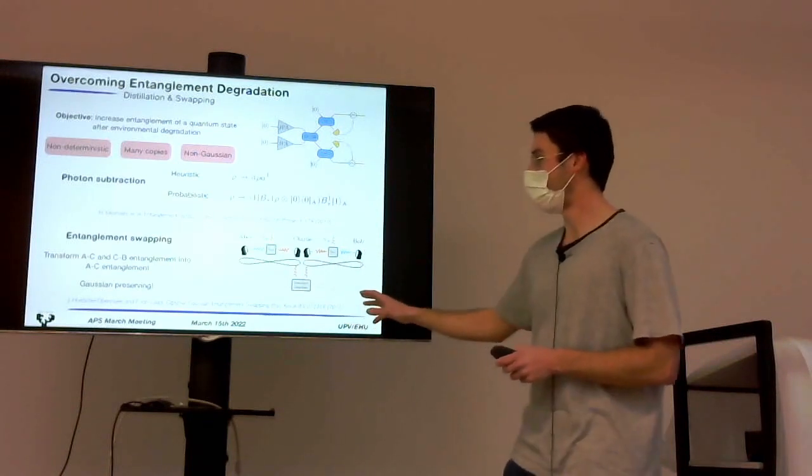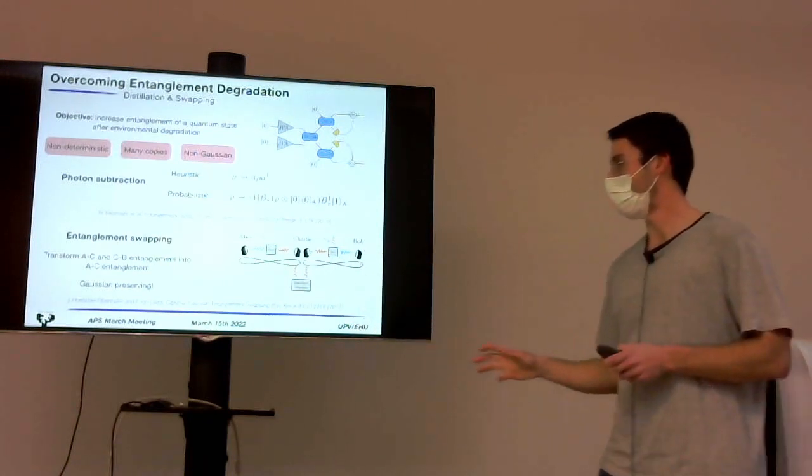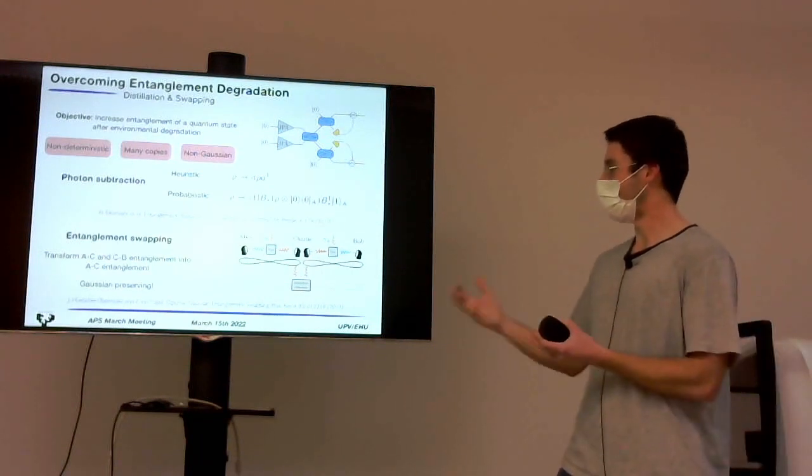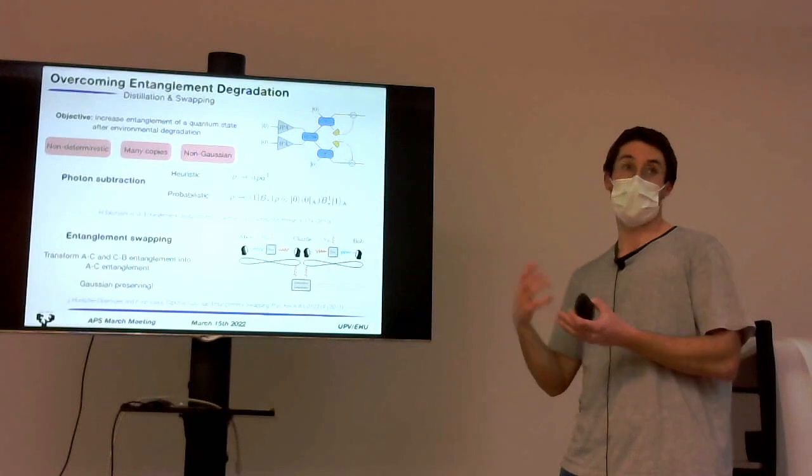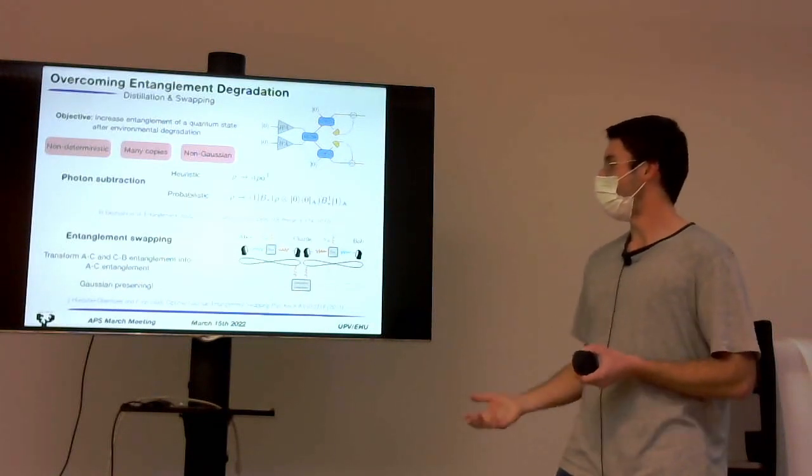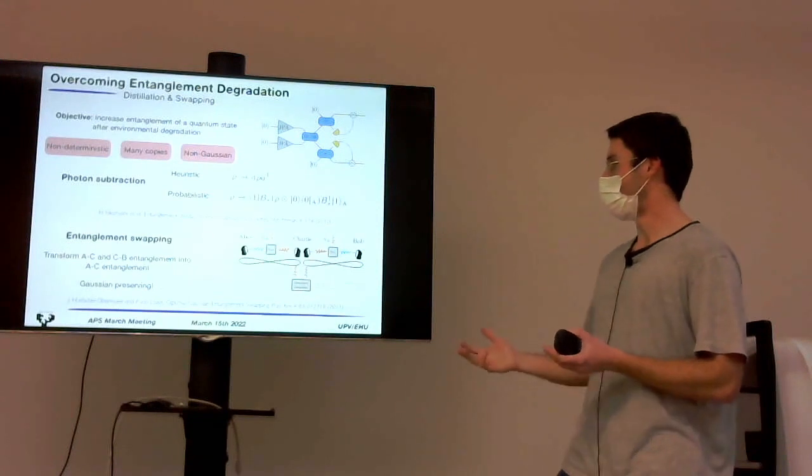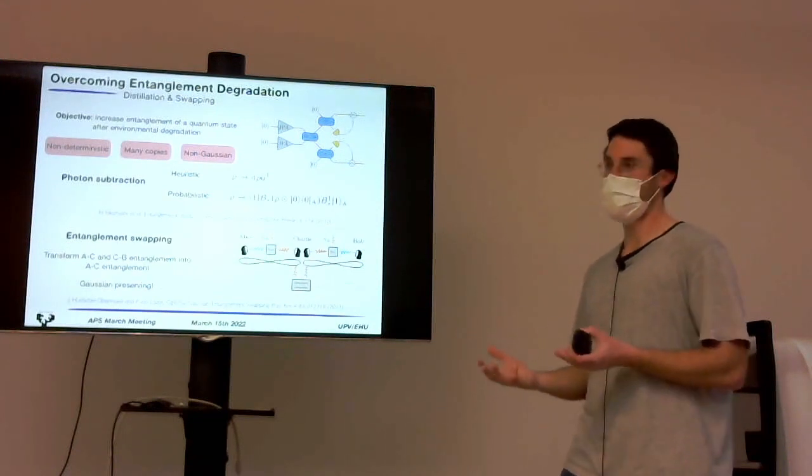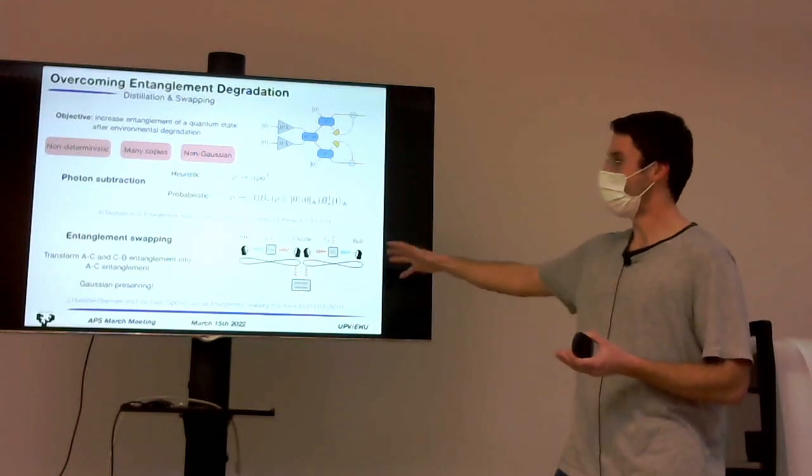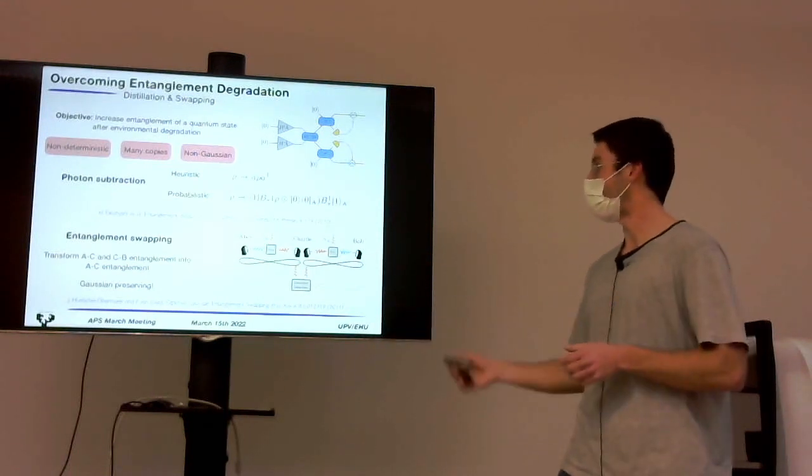Since this is Gaussian preserving, the entanglement of the outcome state cannot be higher than the previous state, but we will try to do this in order to overcome the effects of entanglement degradation. So the idea is to reduce the distance that the state have to travel through open air.